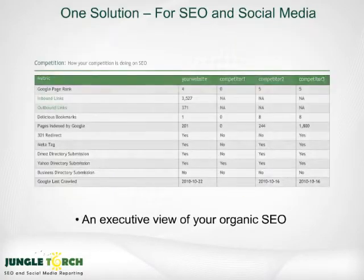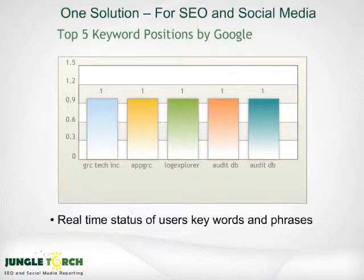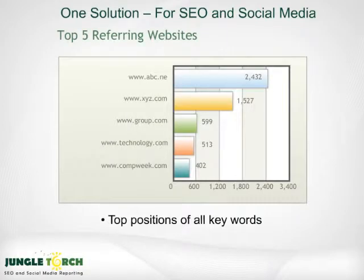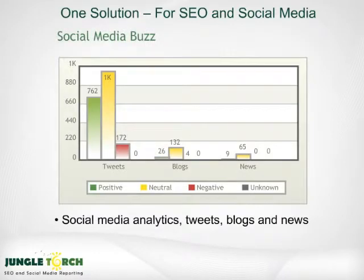Jungle Torch gives you an executive view of your SEO versus your competitors, real-time status of your keywords and phrases in Google, Yahoo, and Bing, the top positions of all keywords on the major search engines, trending reports, inbound and outbound links, social media analytics, tweets, blogs, and news, all with sentiment analysis layered onto the data.